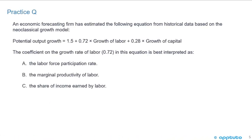And one last practice question to finish this LOS. Again, an economic forecasting firm has estimated the following equation from historical data based on the neoclassical growth model. It's the same equation: potential output growth equals 1.5 plus 0.72 times the growth of labor plus 0.28 times the growth of capital. The coefficient on the growth rate of labor, the 0.72 in this equation, is best interpreted as: